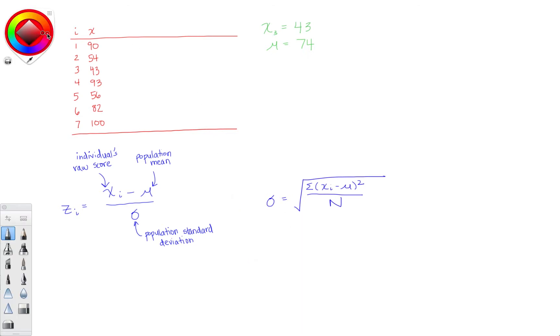This is what most of the work involves when calculating a z-score. We already have the mean that we'll subtract from each value. We're going to do 90 minus 74, 54 minus 74, 43 minus 74, and so on. That's this portion, x sub i minus mu.